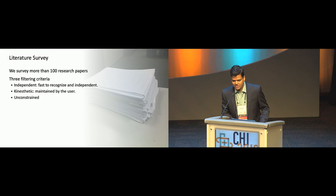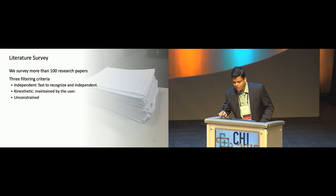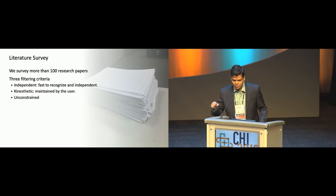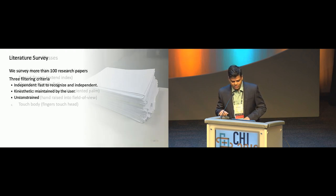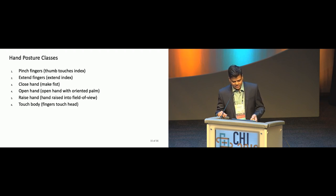The second criterion is kinesthetic action - users should be able to maintain the hand posture throughout completing the task. The last one is unconstrained - while the user is maintaining this kinesthetic hand posture, they should be able to do that around their body while being in VR. Applying these three filtering criteria, we arrived at six hand postures: pinching fingers, extending fingers, closing hand, open hand, raised hand, and touching the body.